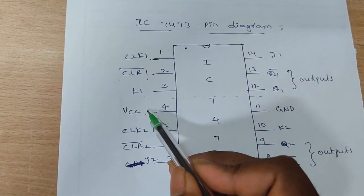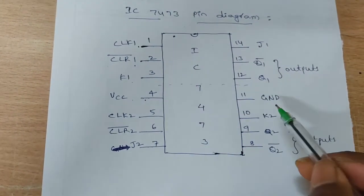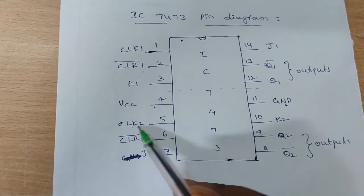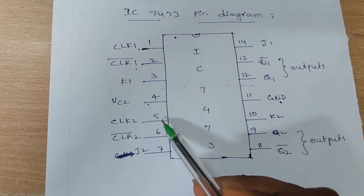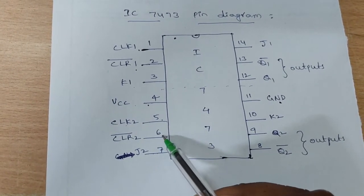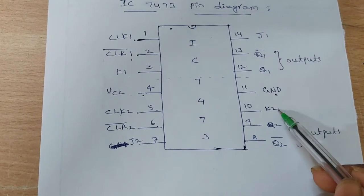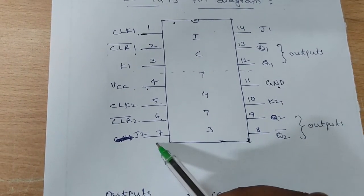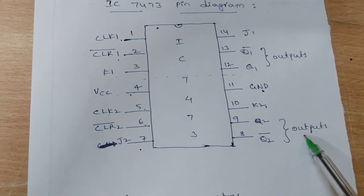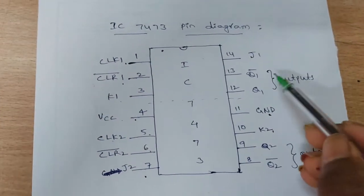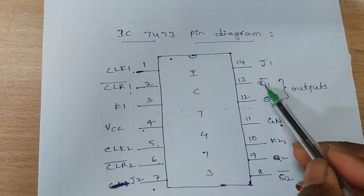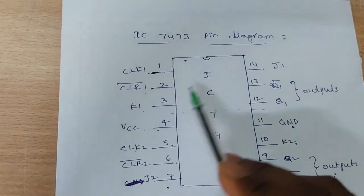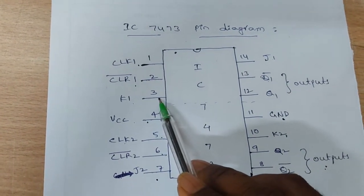Pin 4 is VCC and pin 11 is ground. For the second flip-flop, clock 2 is pin 5 and clear 2 is pin 6. Pin 10 is K2 and pin 7 is J2. These are the outputs for flip-flop 2, and these are the outputs for flip-flop 1. Pin 14 is J1 and pin 3 is K1.